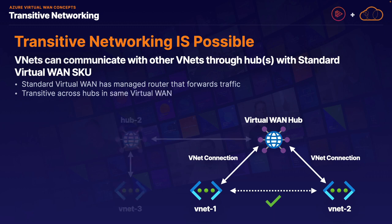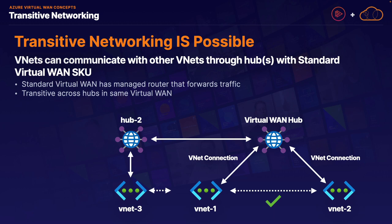Transitive networking is not limited to a single hub in a single Virtual WAN implementation. If you have multiple hubs in the same Virtual WAN, transitive networking also works across multiple hubs. For example, VNet3 attached to Hub 2 is able to directly communicate with VNet1 and VNet2 thanks to transitive networking built into each hub. By default, every network is able to communicate with every other network — anyone can talk to anyone. Virtual networks can also communicate with hybrid locations, and we do not have to go through the additional configuration of tagging a hub to use a remote gateway, as that is all automatically turned on by default.